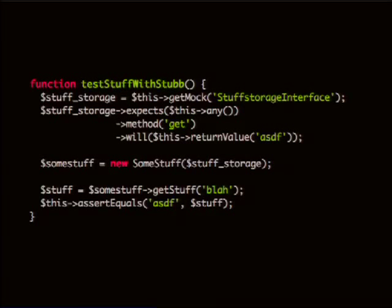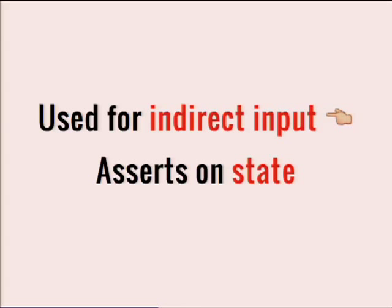It's probably a little confusing that the method is called getMock and I'm saying that this is a stub. It's not that gray of an area — if you actually look at the PHPUnit documentation, they're clear that these are stubs; they just all come from the mock method, because it can sort of be both. A stub is used for indirect input and it asserts on state — meaning you use a stub when you have input happening that is not passed in the method signature, and then you do an assertion on state.